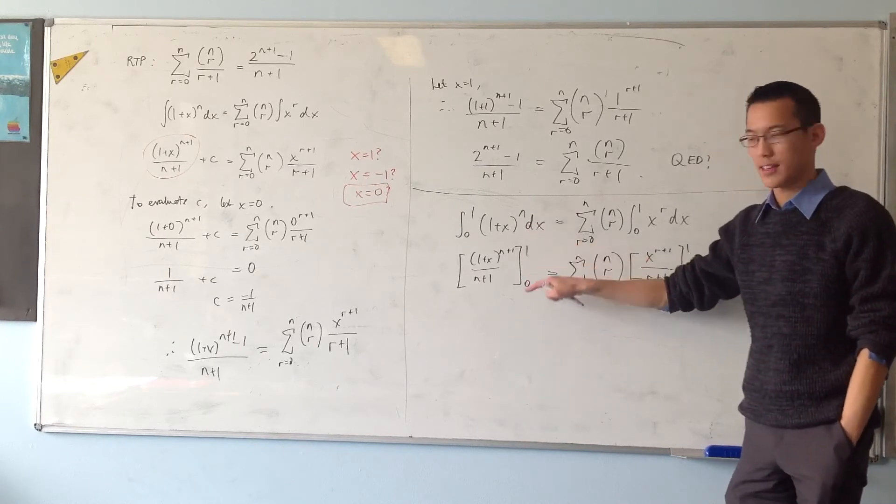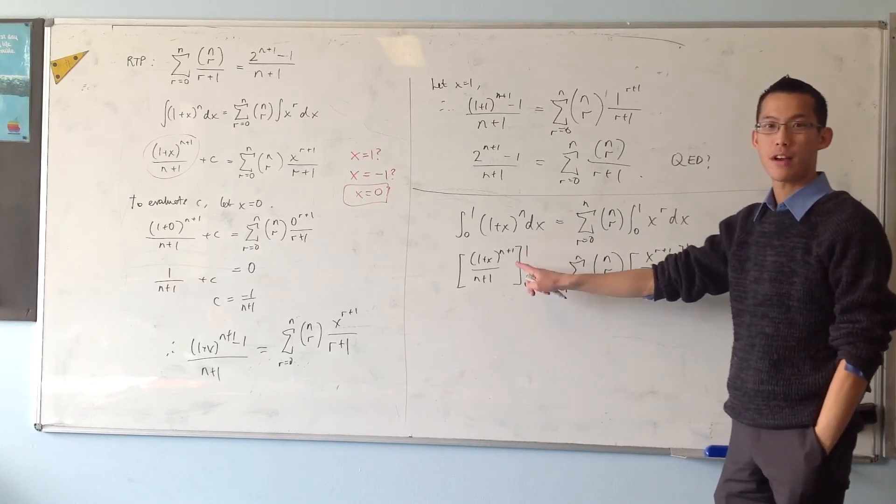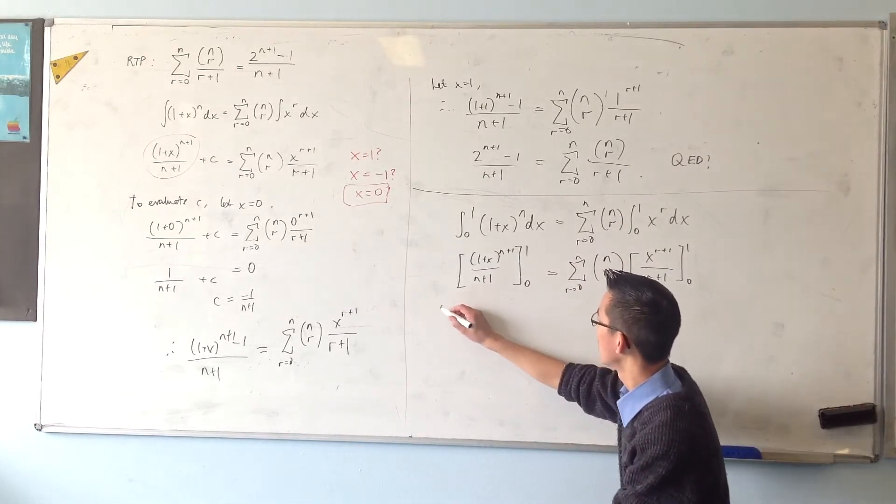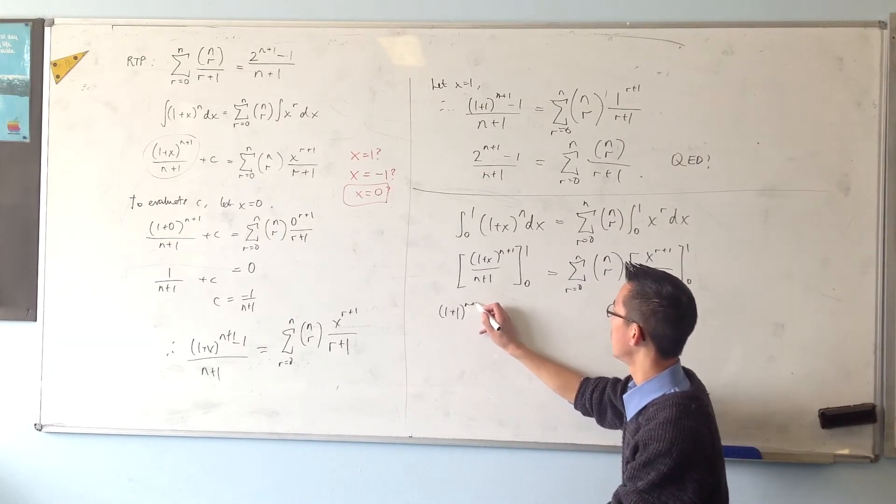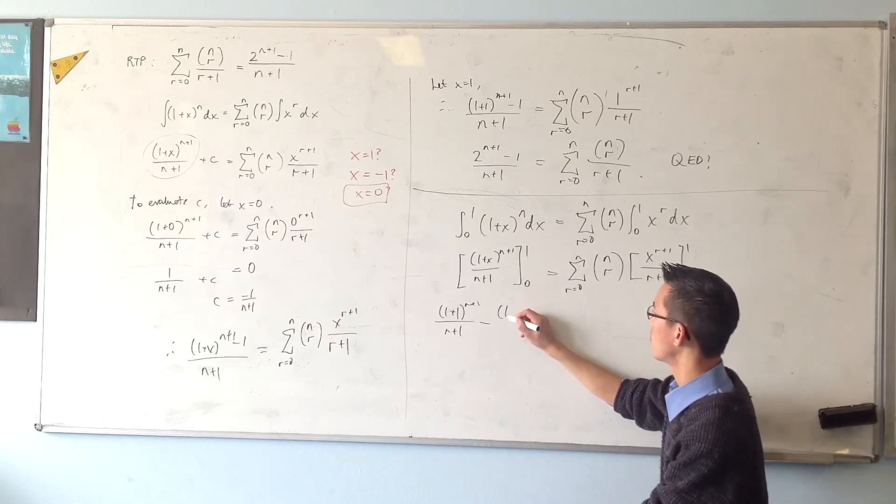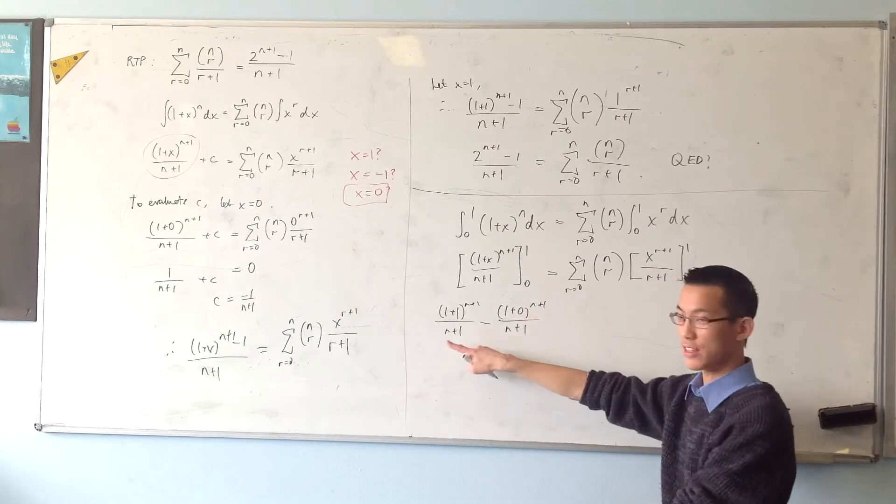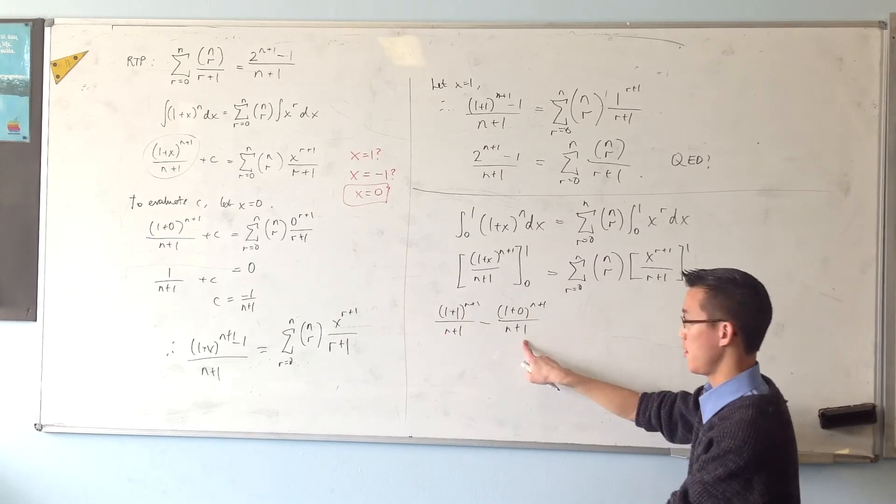So, what I'm going to get is this, 1 plus 1 to the n plus 1 over n plus 1, subtract 1 plus 0 to the n plus 1 over n plus 1. So, that's just evaluate for 1, evaluate for 0. What happens on the right-hand side? Evaluate for 1, evaluate for 1, so that's this, and then subtract, evaluate for 0.